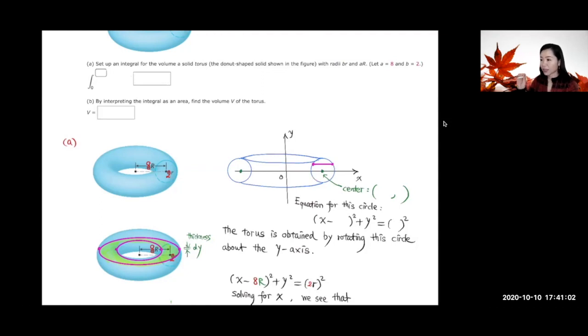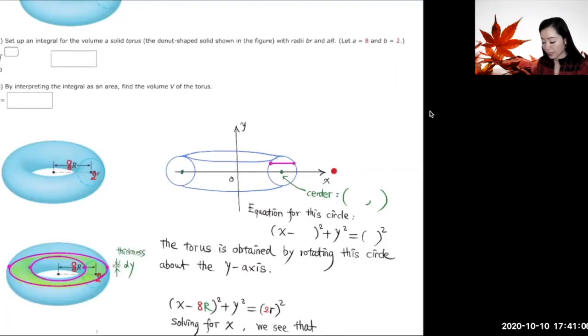So let's look at it from this way. We set up this x-axis this way, y-axis this way, and the center of this circle is going to be from here to here, that's 8r, so x-coordinate is 8r, y-coordinate is 0, because on the x-axis.